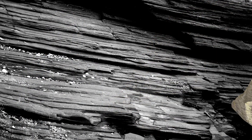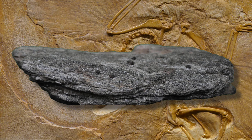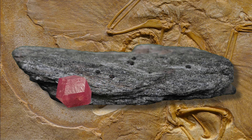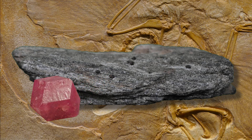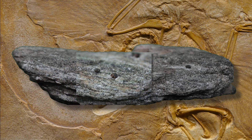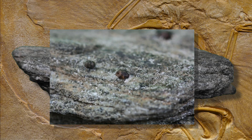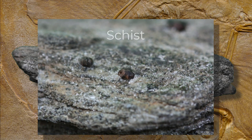As temperatures and pressures continue to increase, some of the newer minerals combine with other elements and recrystallize into garnet, which is a beautiful ruby-red gemstone. At this stage, the foliation becomes really crinkly and wavy, and the rock gives off a beautiful silver luster. But with the addition of the garnet crystals, it becomes really distinctive. We call these metamorphic rocks schists.